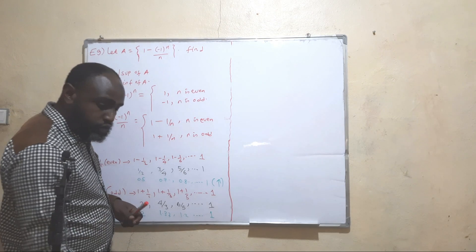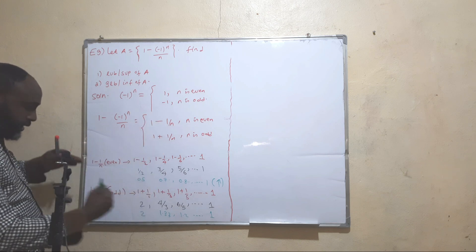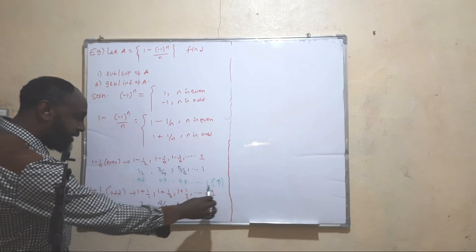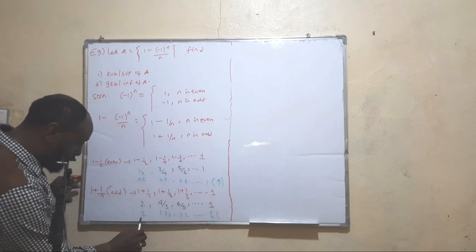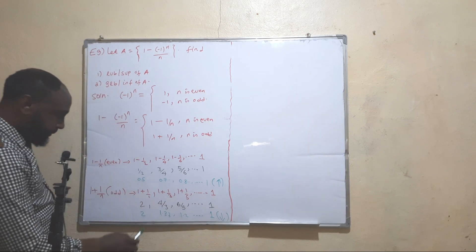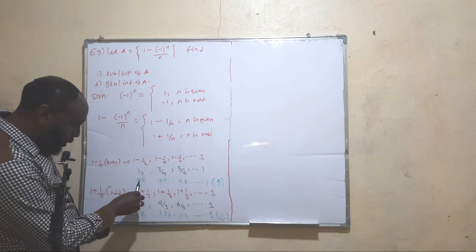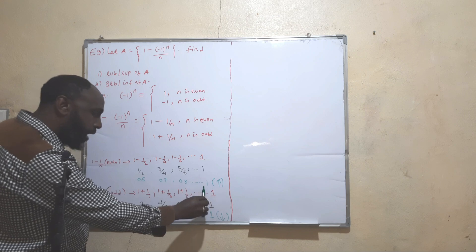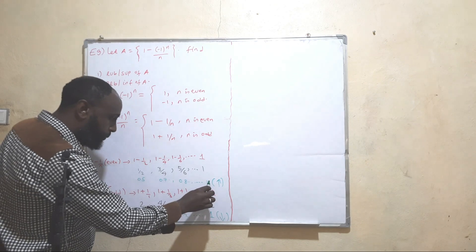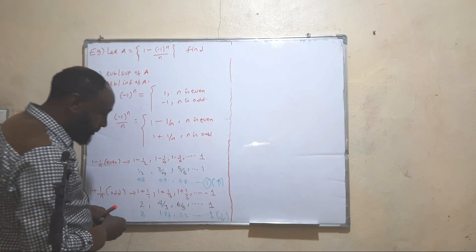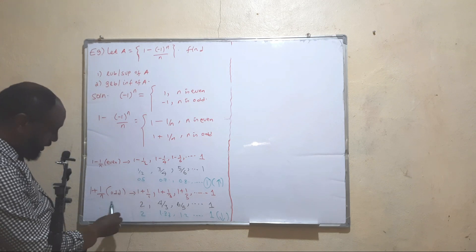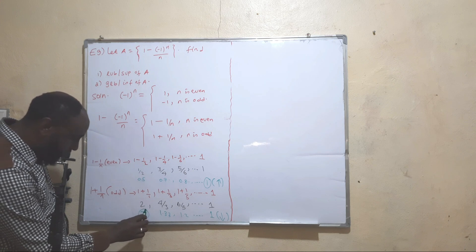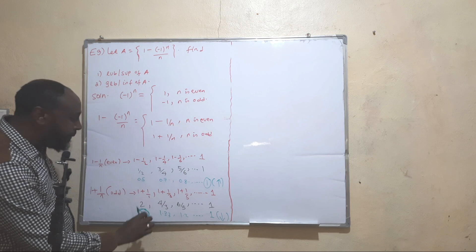Now let's merge the two parts, because we need one answer. The even part is increasing toward 1, so its least upper bound is 1. The odd part is decreasing from 2 toward 1, and 2 is the largest value. So the least upper bound of the odd part is 2. The largest of the two suprema (1 and 2) is 2.